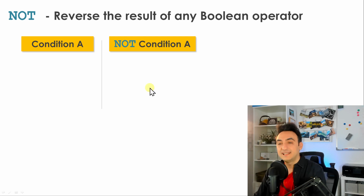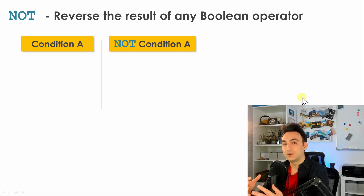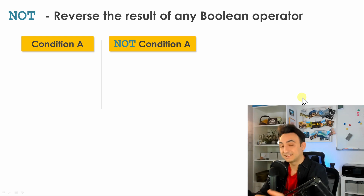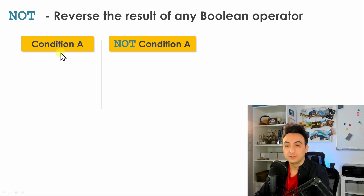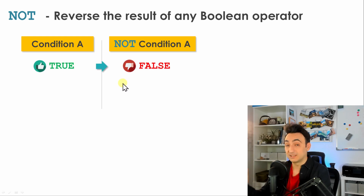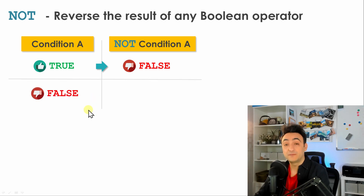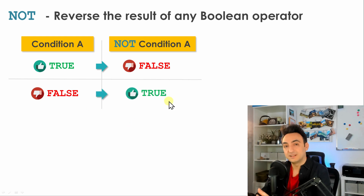The NOT operator reverses the result of any boolean expression — it always gives you the opposite. If you say left it goes right, if you say right it goes left. It works with only one condition, not combining two like AND and OR. So if condition A is true and you use NOT, you get false. If you have false and use NOT, you get true — it always reverses the result.